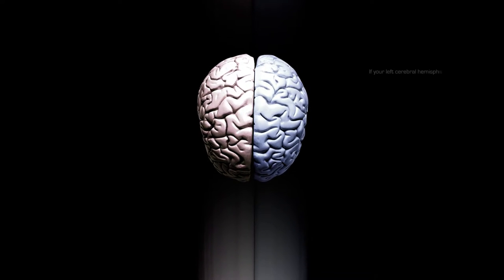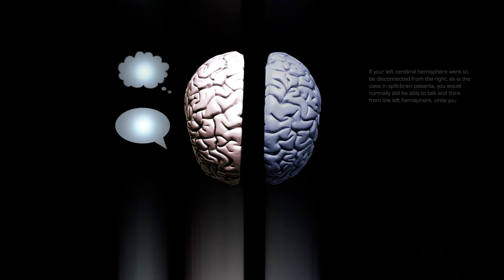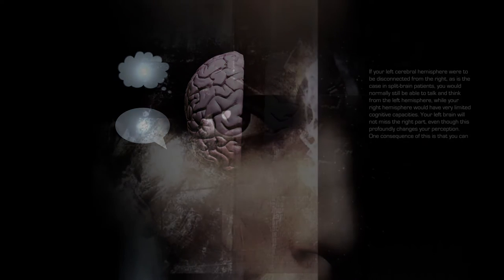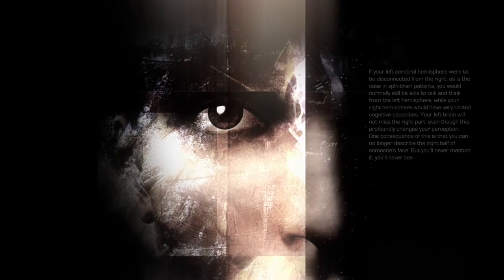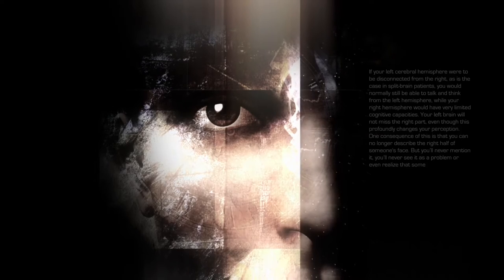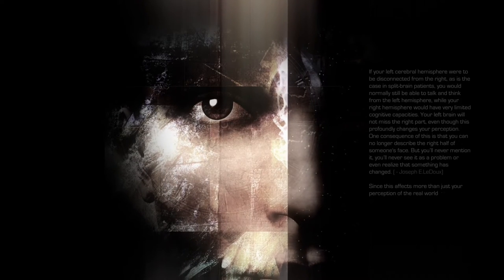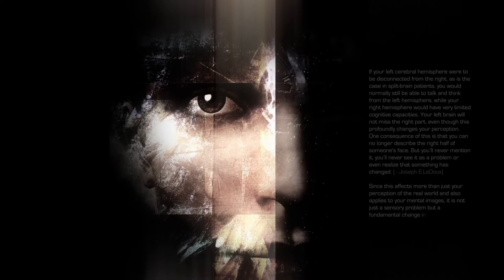If your left cerebral hemisphere were to be disconnected from the right, as is the case in split brain patients, you would normally still be able to talk and think from the left hemisphere, while your right hemisphere would have very limited cognitive capacities. Your left brain will not miss the right part, even though this profoundly changes your perception. One consequence of this is that you can no longer describe the right half of someone's face, but you will never mention it, you will never see it as a problem or even realize that something has changed. Since this affects more than just your perception of the real world and also applies to your mental images, it is not just a sensory problem, but a fundamental change in your consciousness.